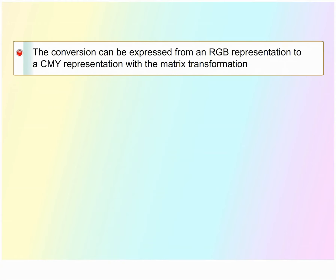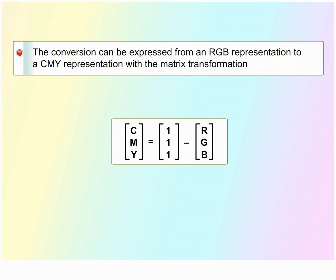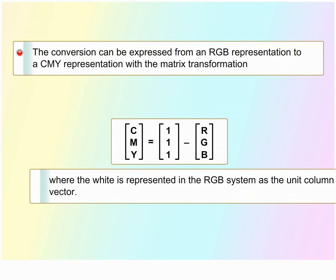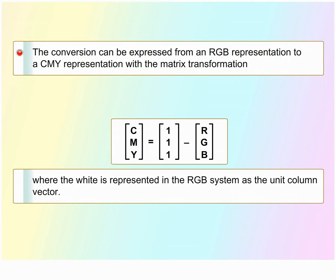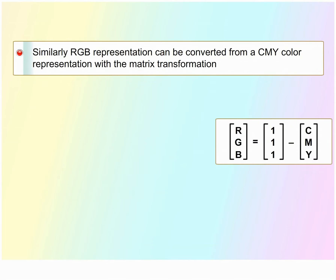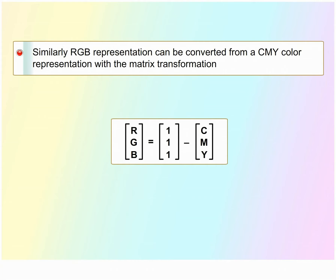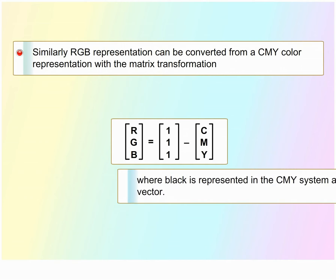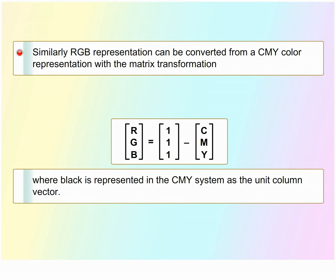Some plotters produce different color combinations by spraying ink for the three primary colors over each other and allowing them to mix before they dry. We can express the conversion from an RGB representation to a CMY representation with a matrix transformation, where white is represented in the RGB system as a unit column vector. Similarly, we convert from CMY to RGB with the inverse matrix transformation, where black is represented in the CMY system as a unit column vector.